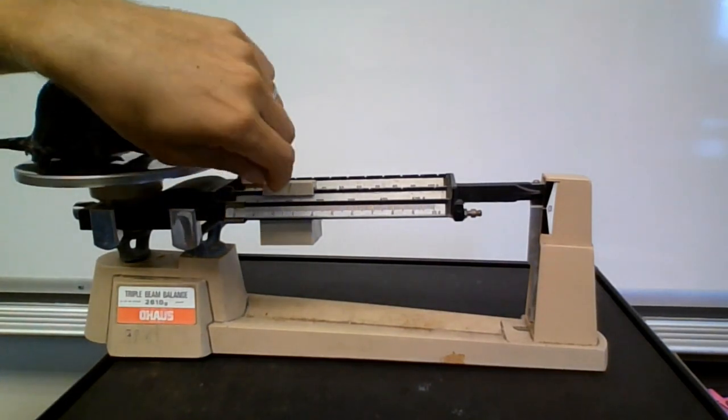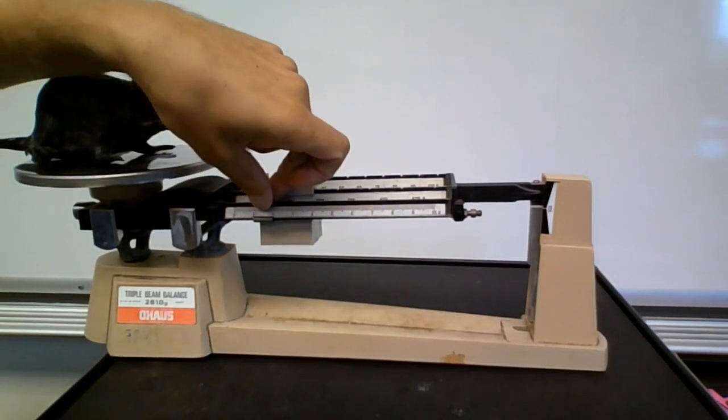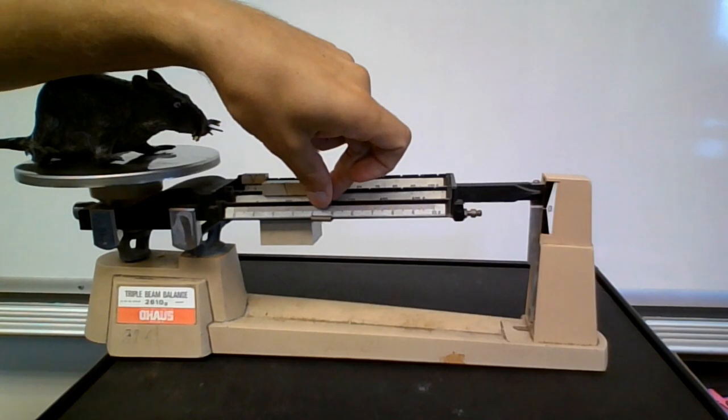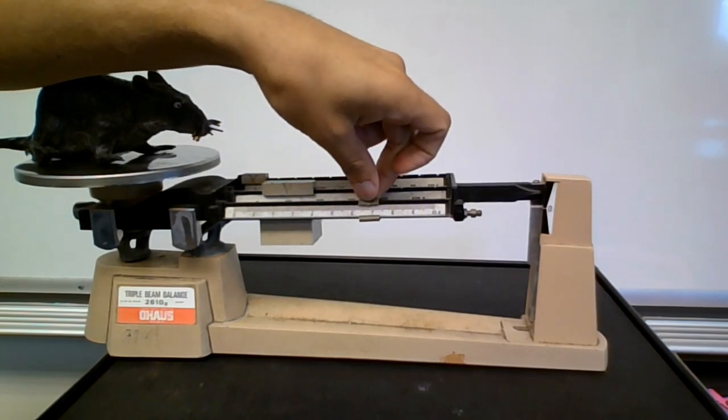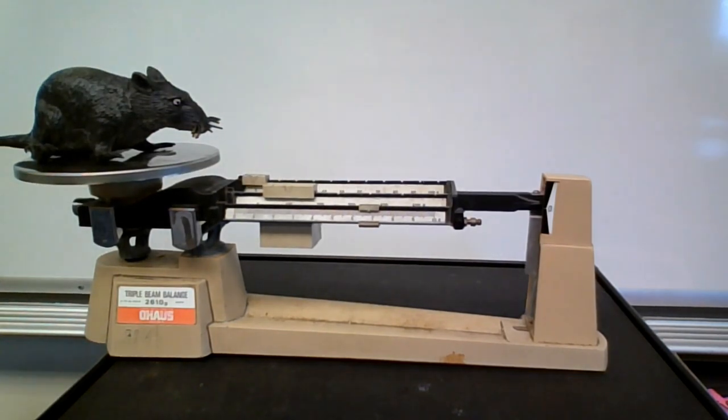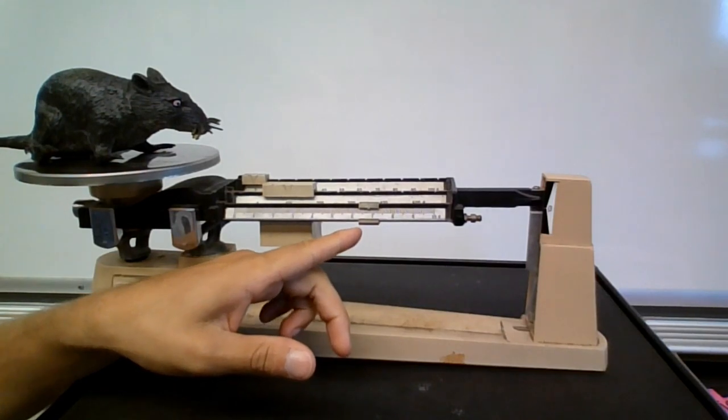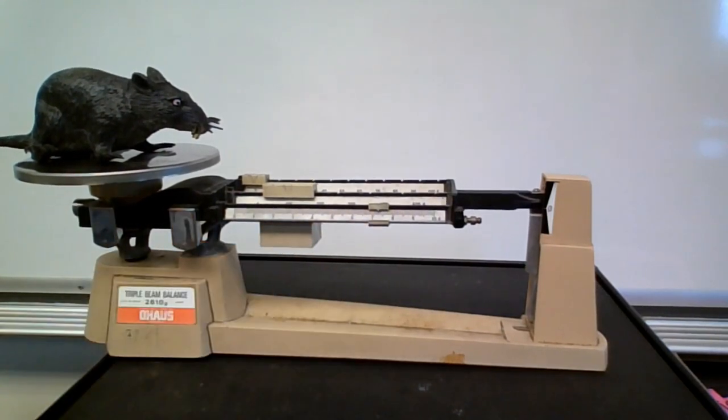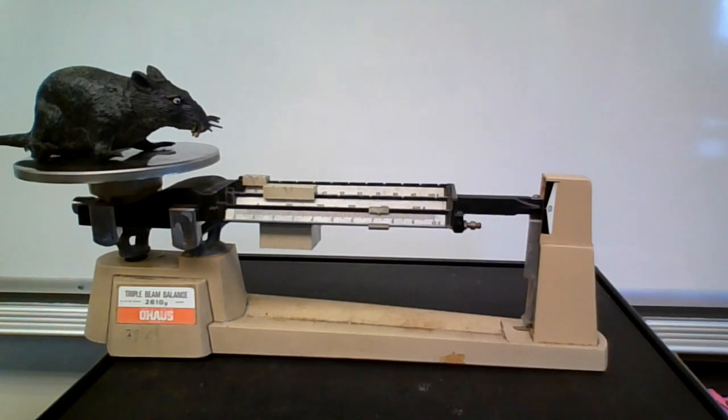If we slide this, 102, 103, 104, 105, 106, 107. Let's leave it 107. Just a little bit more. Move to 107.4. And we're going to see that it balances out. So we know our rat here, our specimen, is 107.4 grams.